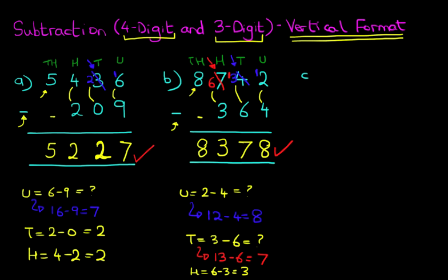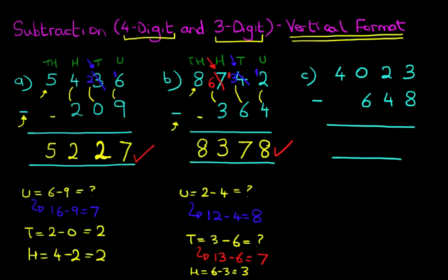Okay, let's look at one more. We've got 4,023 minus 648. Again, we're going to label the columns. We've got units, tens, hundreds, and thousands.